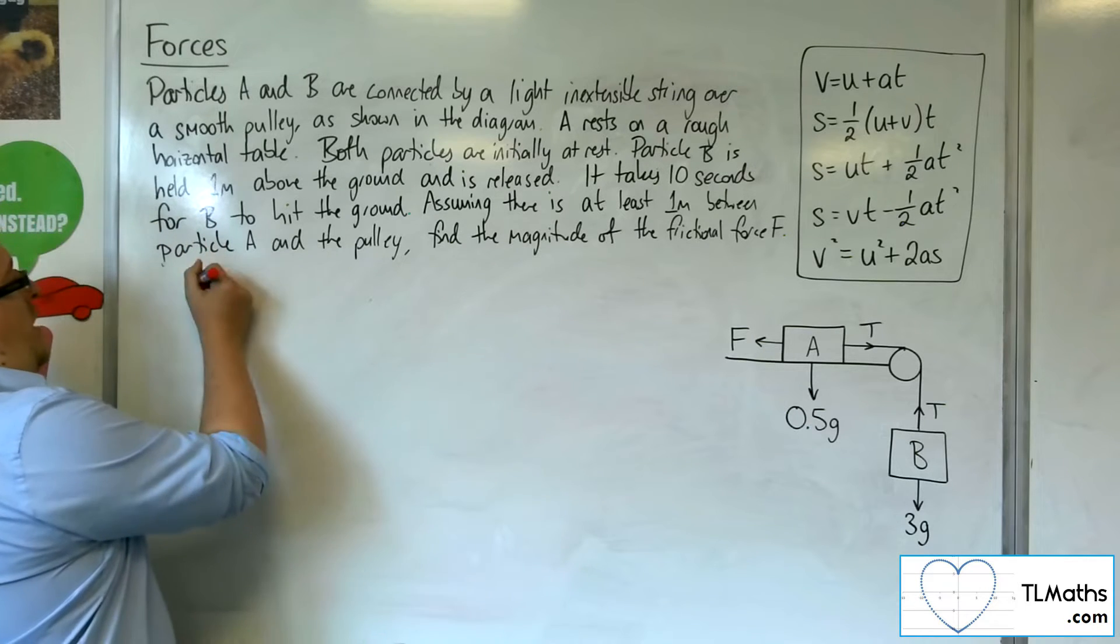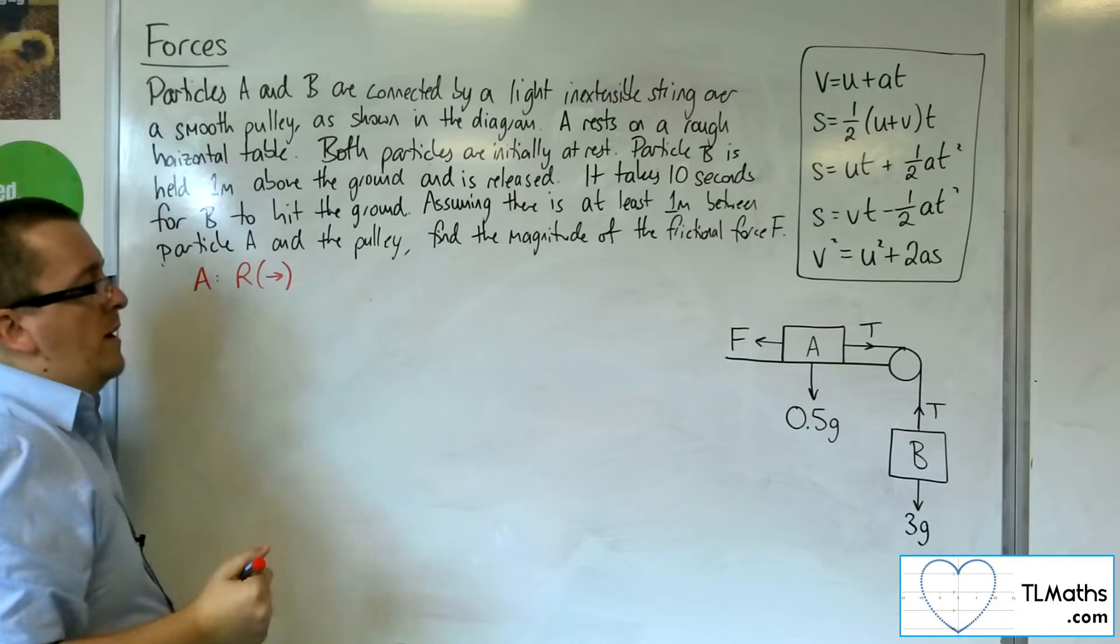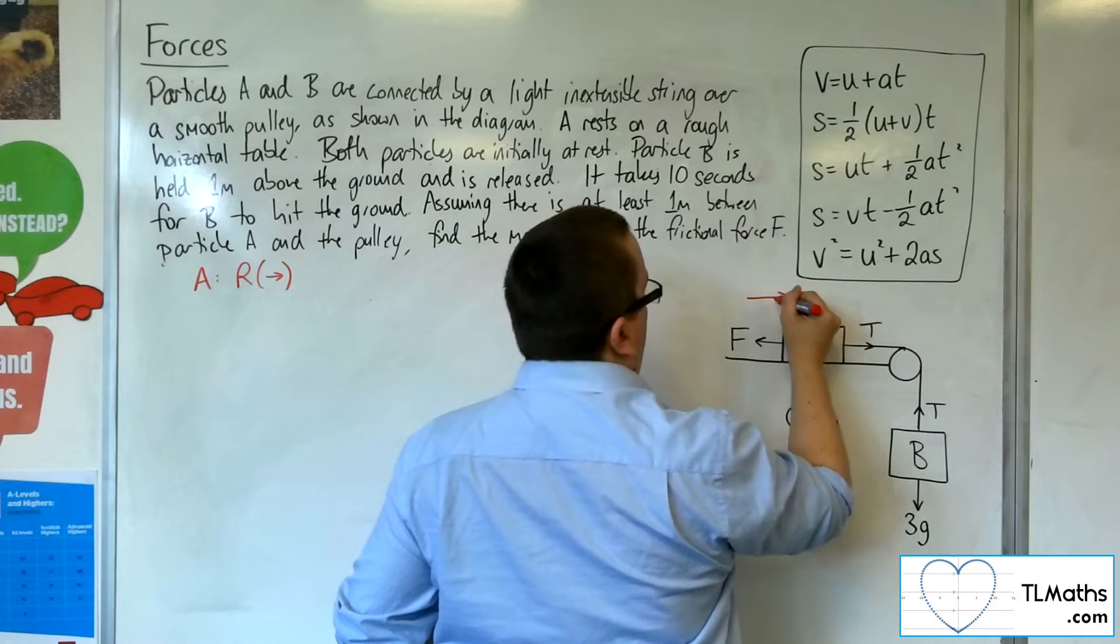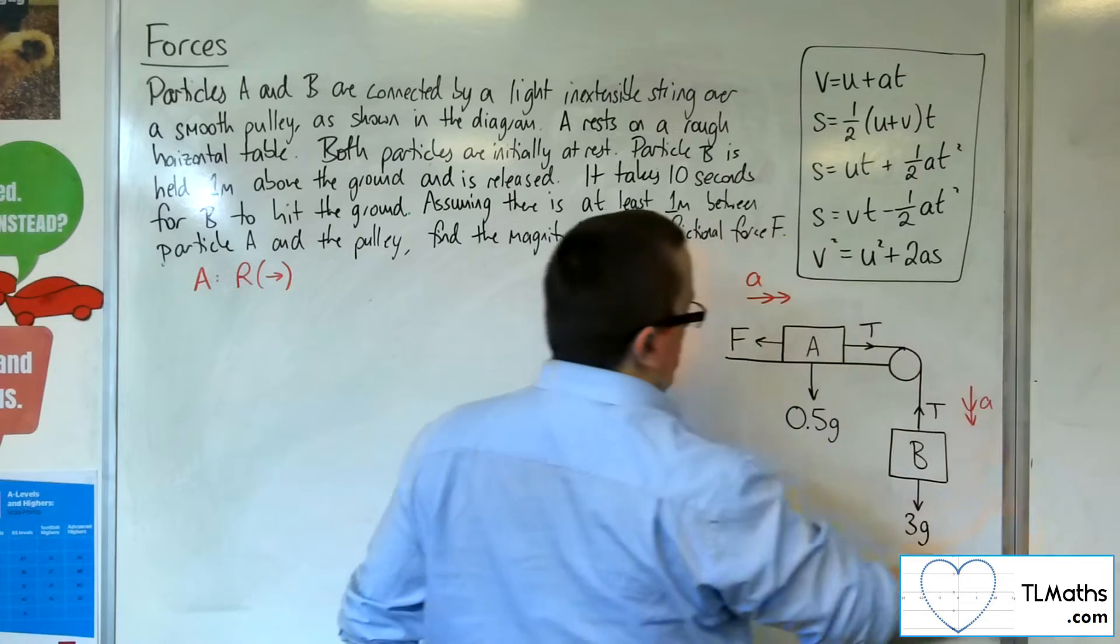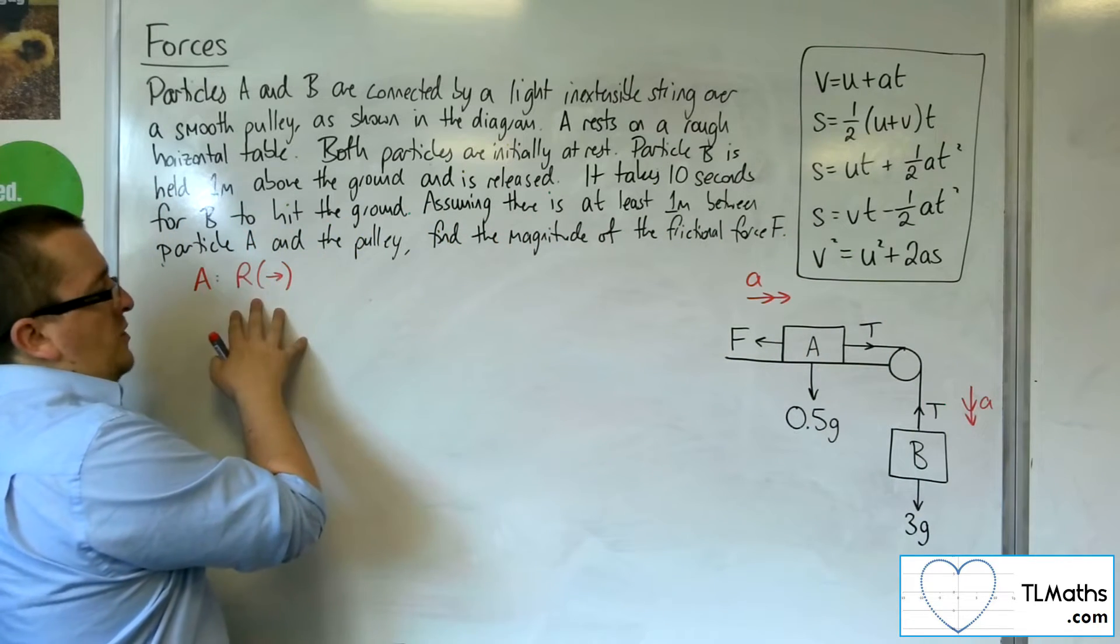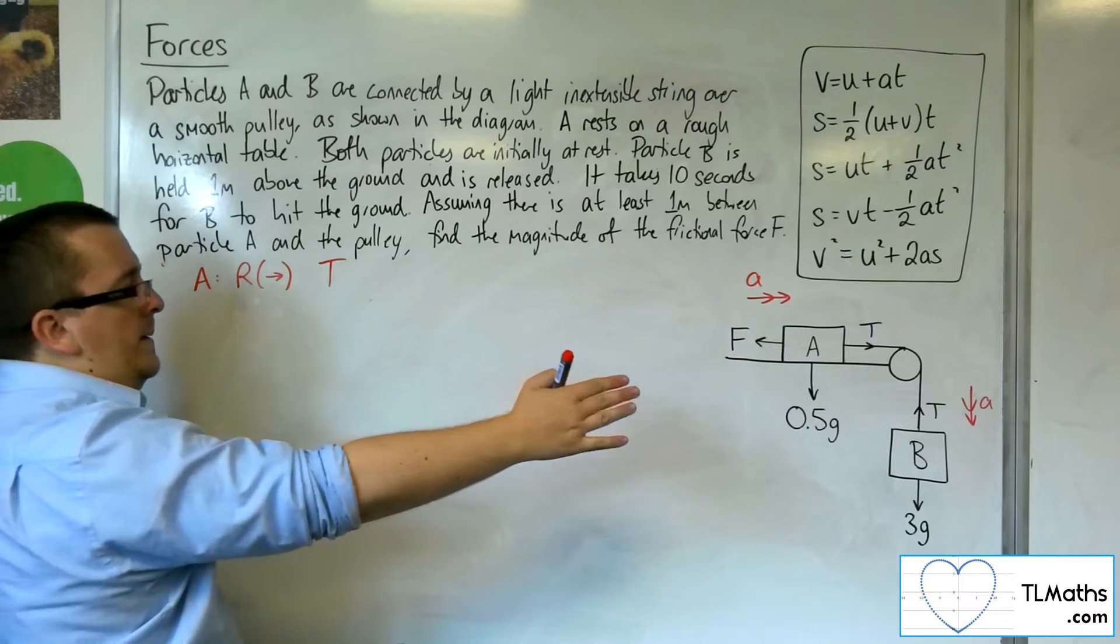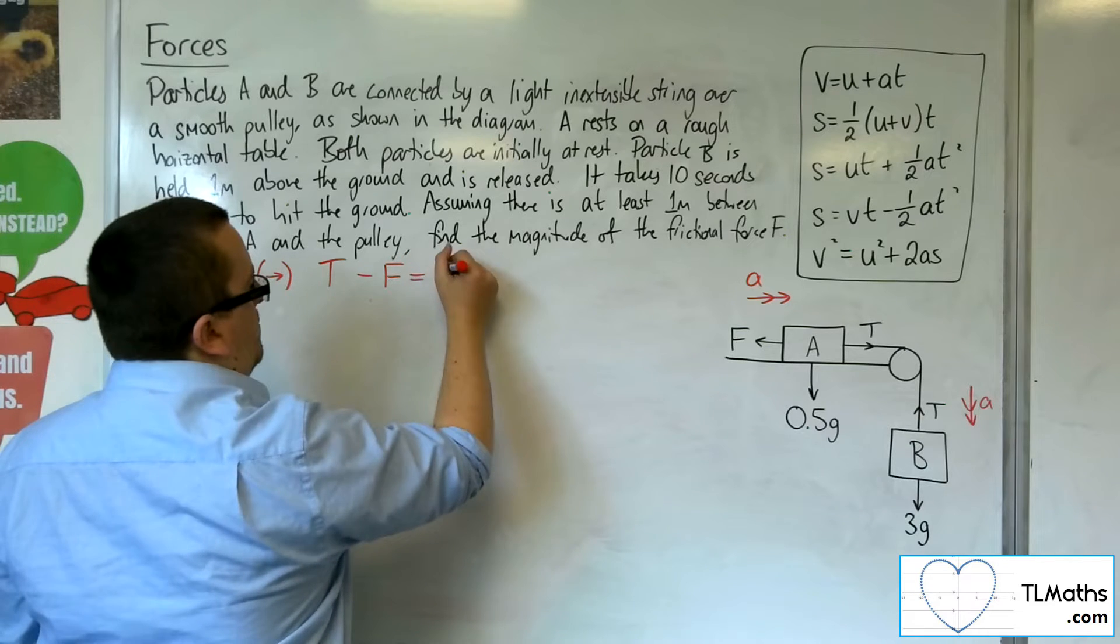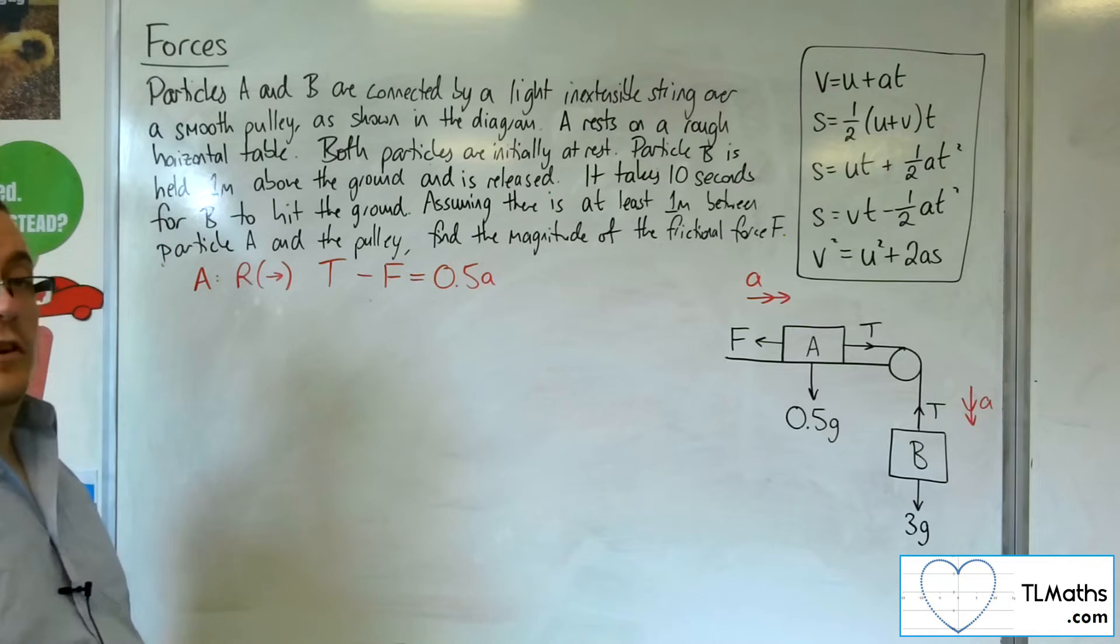So if we have a look at particle A and we resolve the forces horizontally, taking to the right as positive. Remember, we've got the acceleration working in this direction, from the A and the B. So if we resolve horizontally, taking to the right as positive, we've got the tension taking us that way. We've got the frictional force working against us. That's got to be equal to the mass times the acceleration. So that's our first equation.